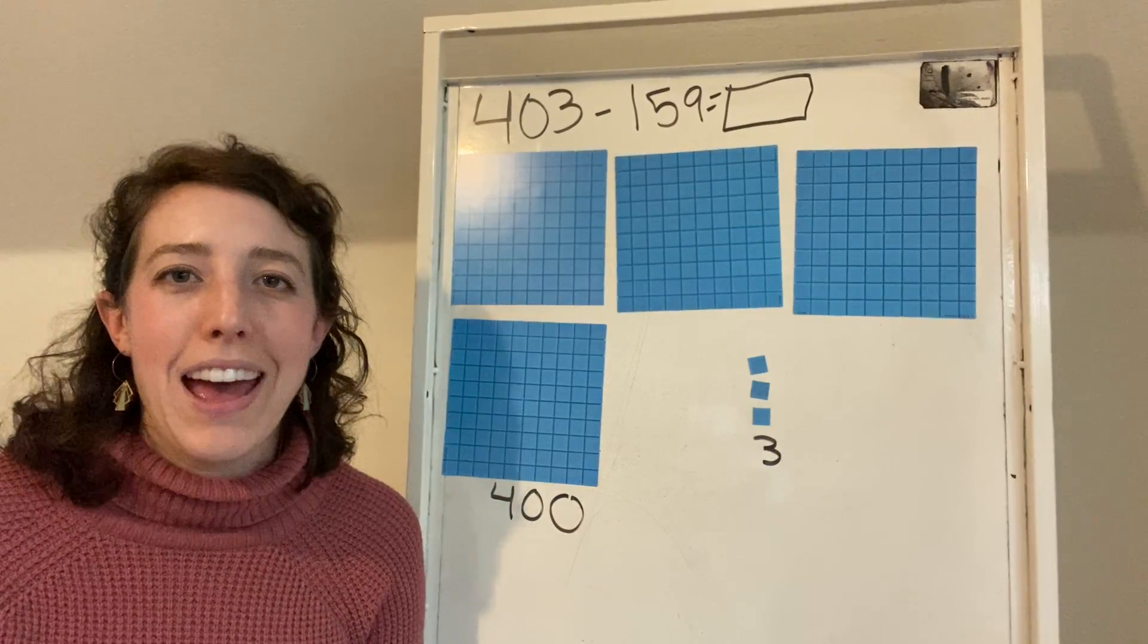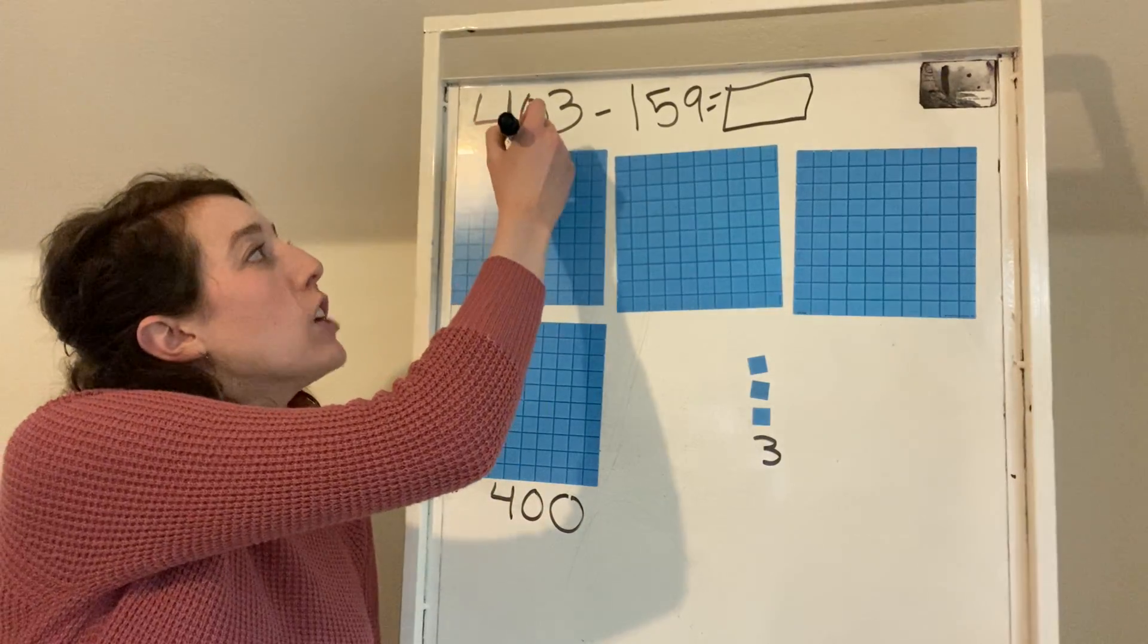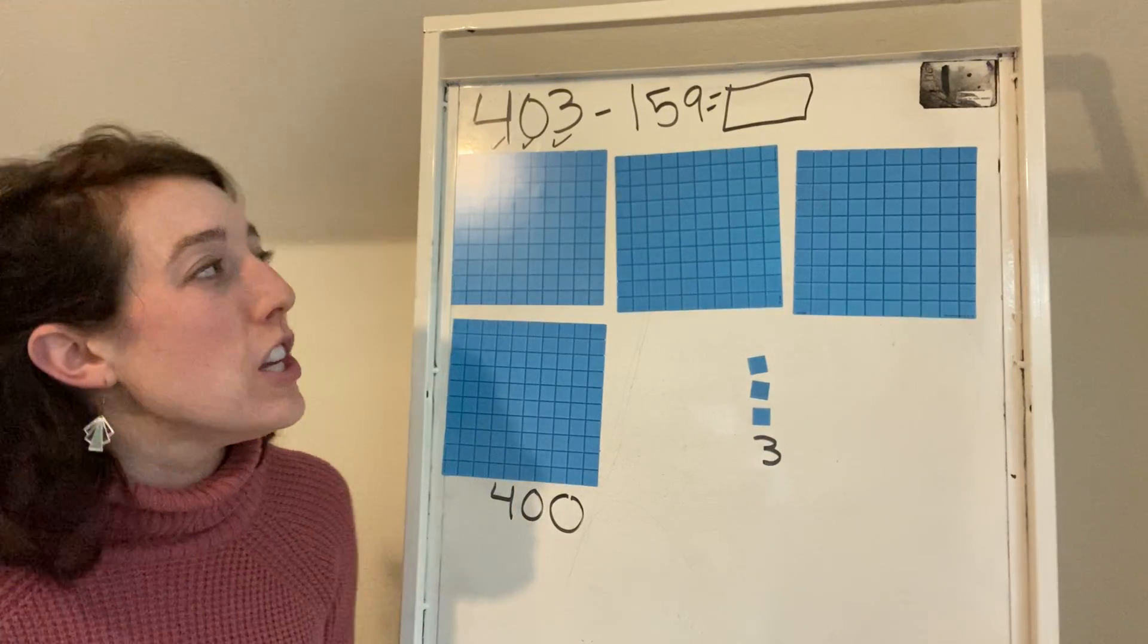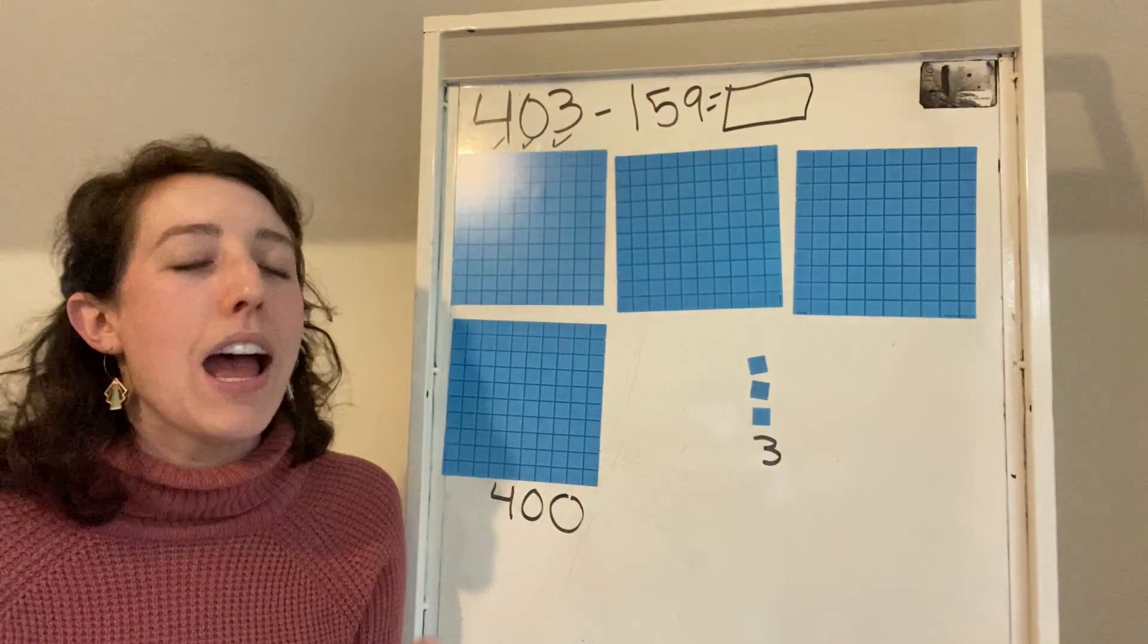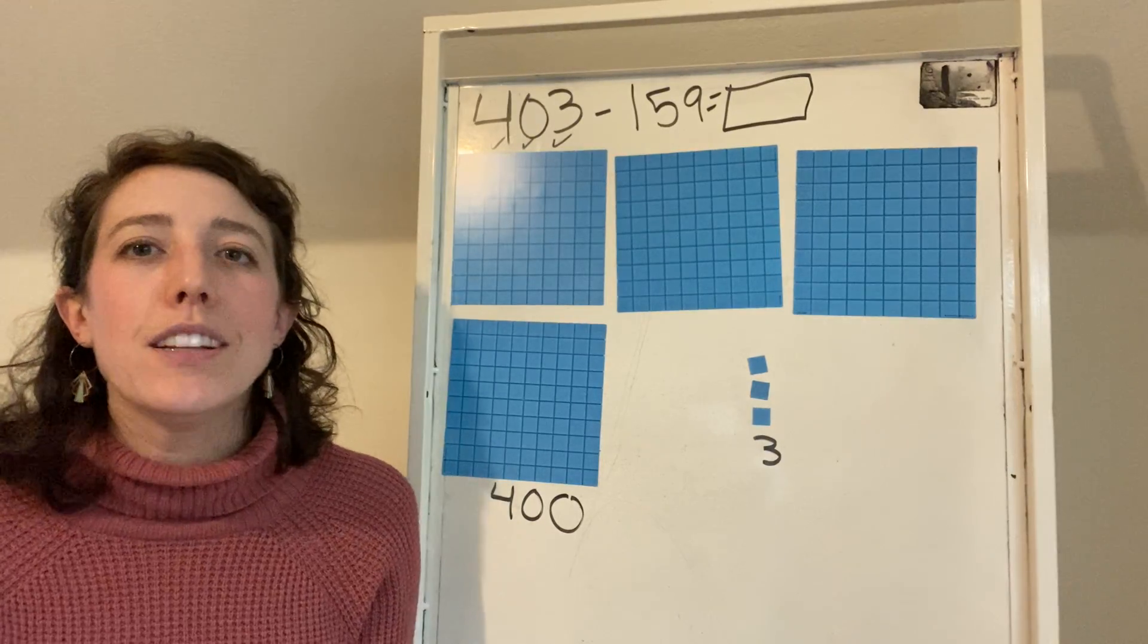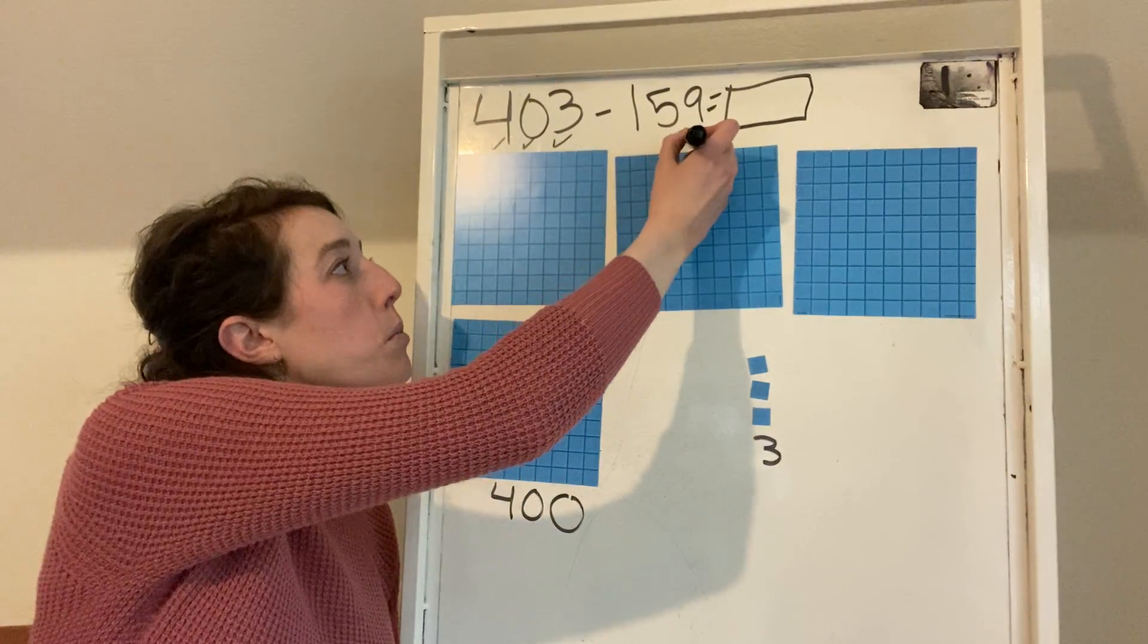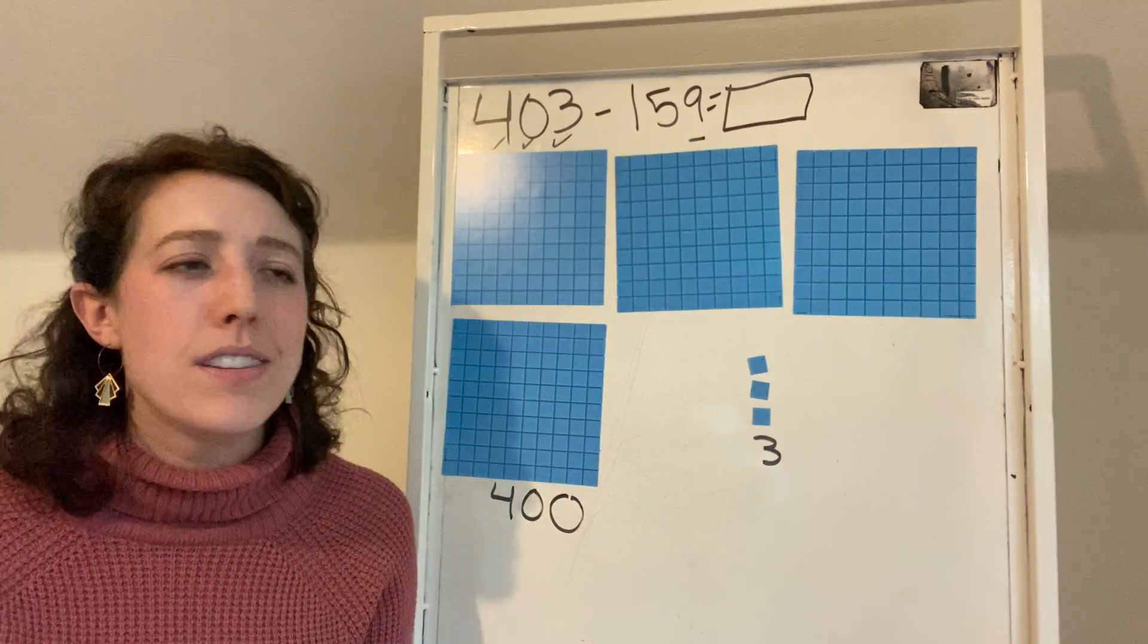So now that I have built my 403, I can even draw little check marks beneath these to keep track of my work to show that I built it. But the next thing that I'm going to need to do is to subtract 159. So I'm actually going to start off by trying to subtract my ones. I need to subtract nine ones. So let's look at our ones together.